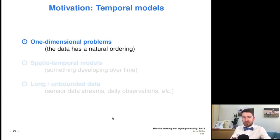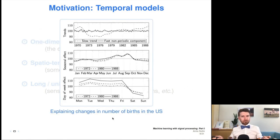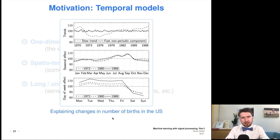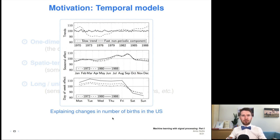So temporal models — by temporal models I basically mean one-dimensional problems. So basically time series, where the data has a natural ordering over time. This is an example: modeling the number of childbirths in the US over several decades. The observations are just the number of babies being born for each day, and the task here is to do some exploratory analysis about how that has changed over the years — like what are the day-of-week effects, time-of-year effects, and so on. So this is time series modeling.